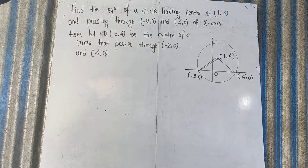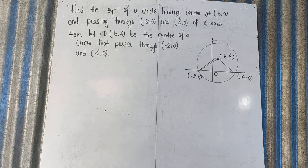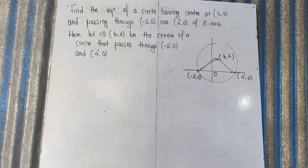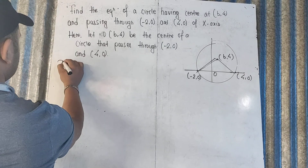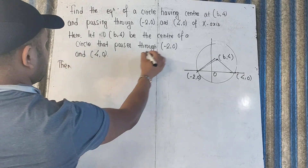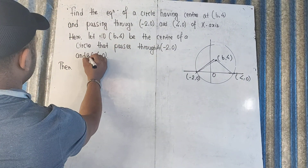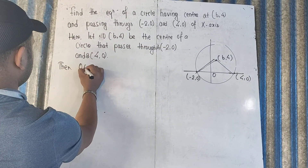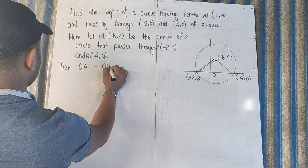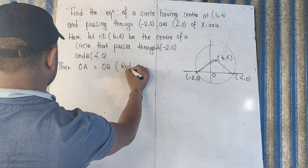Now, if you want to use the equation of a circle, you can use the center and radius of the circle. The center b is the value of the center. So, center b is the value. If you want to use the center of the circle, then OA equals OB — they are the radii of the circle.